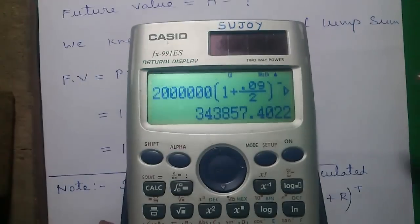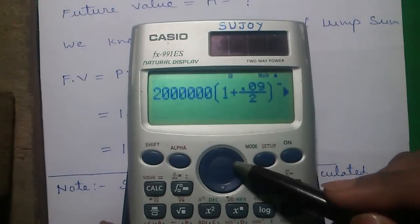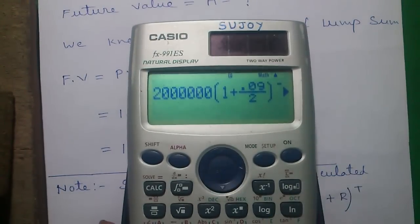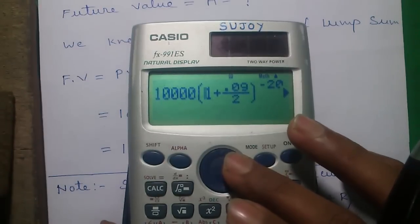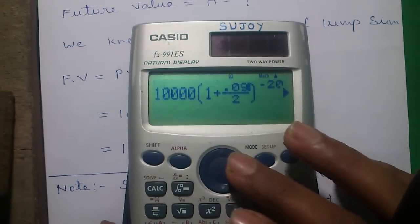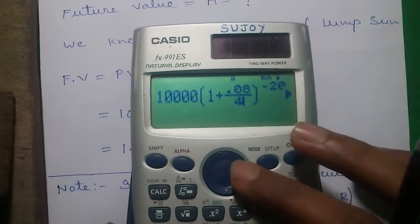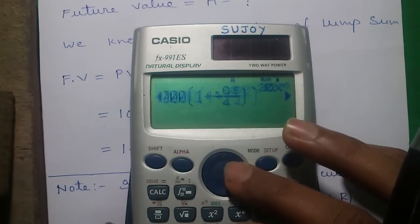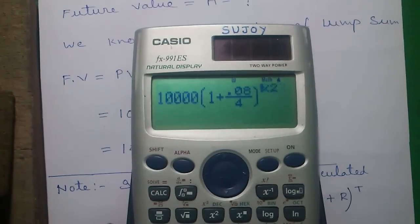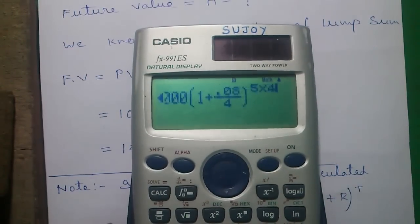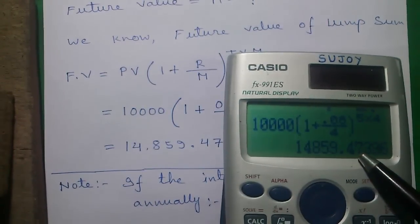Let's do it using our calculator. Here you can use the previous template, just change the values. Here you can use 10,000 into 1 plus 0.08 divided by 4, 5 into 4 and plus equals to, which is 14,859.47.